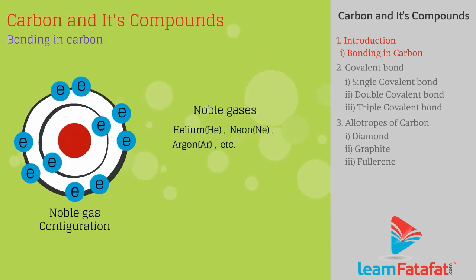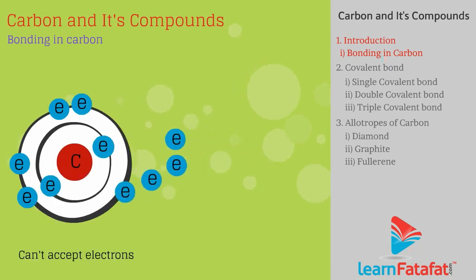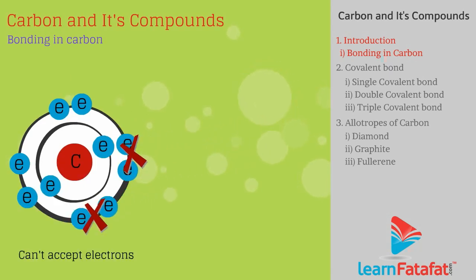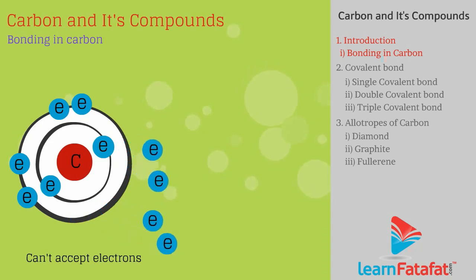Every atom tries to attain noble gas configuration by having a completely filled outermost shell. Carbon cannot accept electrons to gain noble gas configuration, because if it gains 4 electrons, the force of attraction on the outermost shell electrons becomes weak and carbon cannot hold these electrons.